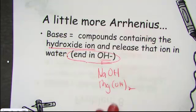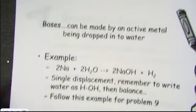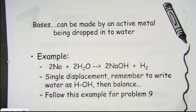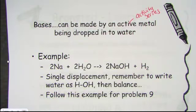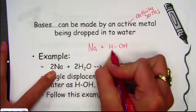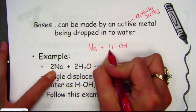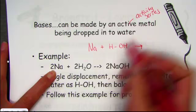Coming from the Arrhenius definition of acids and bases, bases can also be made when an active metal is placed into water. An active metal relies on something we call the activity series. We had a group of metals that were strong enough, active enough, high enough on the series to actually kick out H from water. I like to write water as HOH — you can see the acid and the base — equal part acid and base makes water neutral.